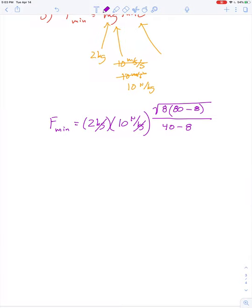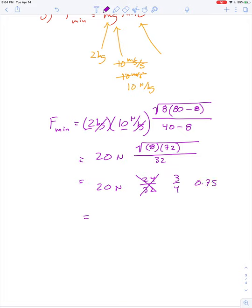So this part's easy. The kilograms cancel out. 2 times 10 gives us 20. So we have 20 newtons times the square root of 8 times 72 all divided by 32. That's equivalent to 20 newtons times, this reduces to 24 over 32, which is the same thing as 3 fourths or 0.75.